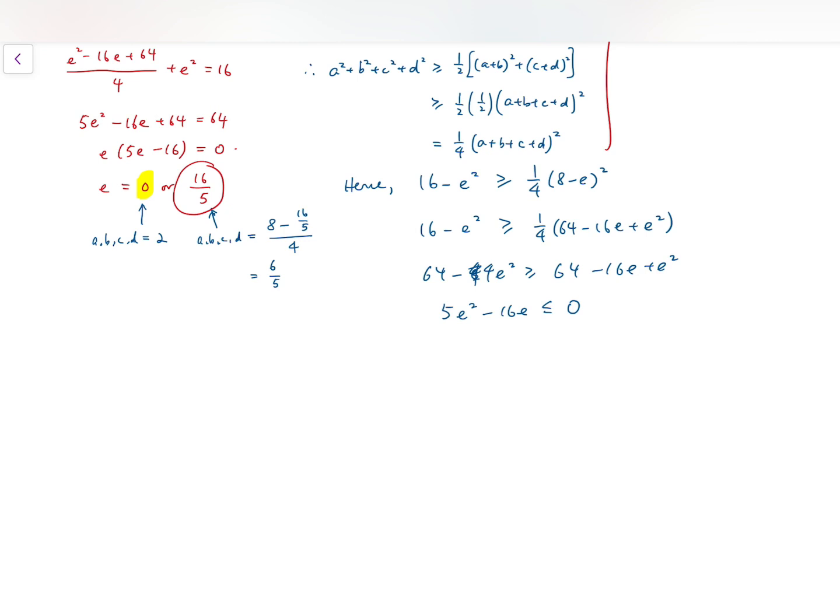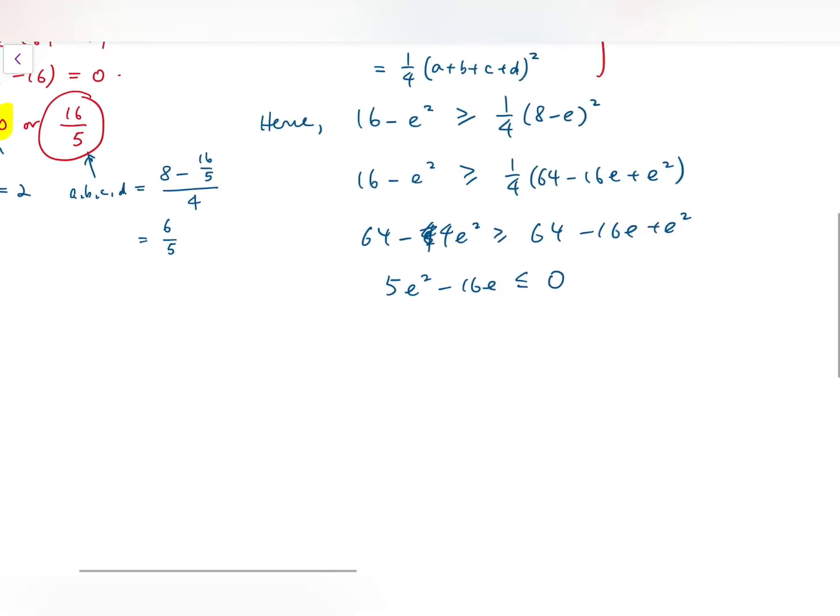Oh sorry, it's 5E squared. I've missed it, 5. So, we've proved formally, at this part, that the minimum value is 0, this is the minimum, while this is the maximum. So this is our final answer, 16 over 5.